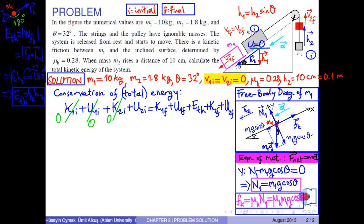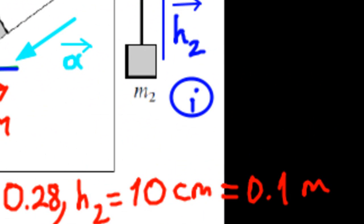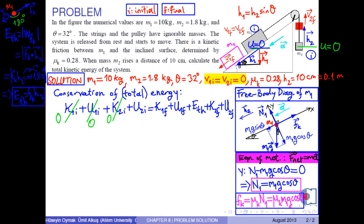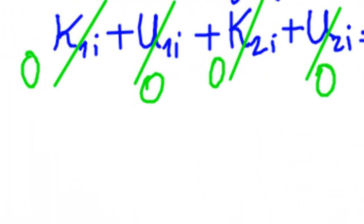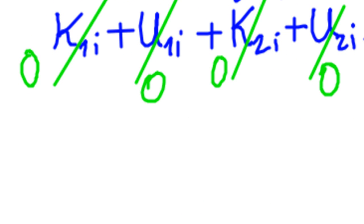And independently of mass m1, if we choose the initial position of mass m2 as a zero gravitational potential energy level for mass m2, the initial potential energy of mass m2 becomes zero. As you see, the total initial energy is zero.